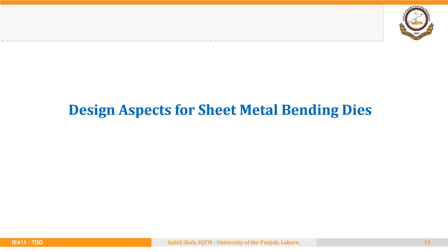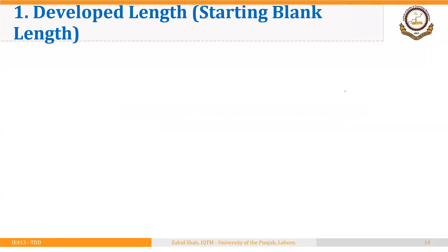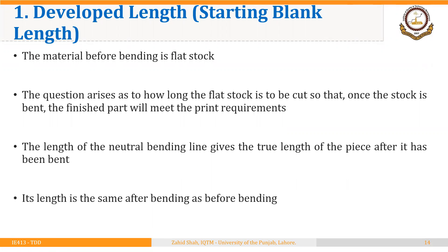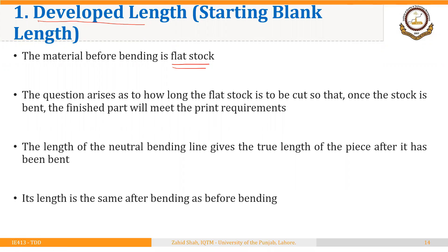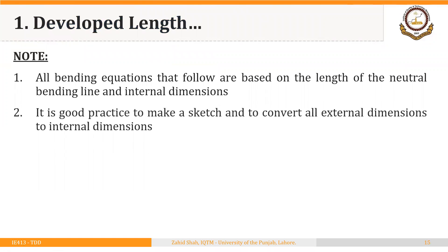We are going to start discussion on design aspects for sheet metal bending operations and sheet metal bending dies. The first aspect is the starting blank length, also called the developed length. The material before bending is flat stock — a flat blank or piece of strip. The length of the neutral bending line gives the true length of the piece after bending, which is the same as before bending. All bending equations that follow are based on the length of the neutral bending line.